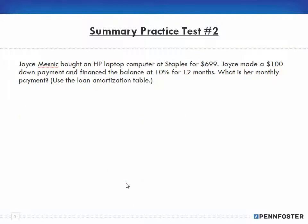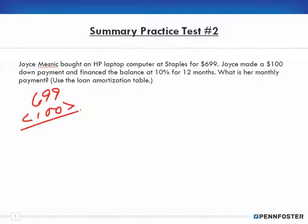Number two: Joyce Messnik bought an HP laptop computer at Staples for six hundred ninety-nine dollars. Joyce made a hundred-dollar down payment and financed the balance at ten percent for twelve months. What is her monthly payment? Use the loan amortization table. She buys the computer at six ninety-nine with a hundred-dollar down payment, meaning she's financing five hundred ninety-nine dollars.